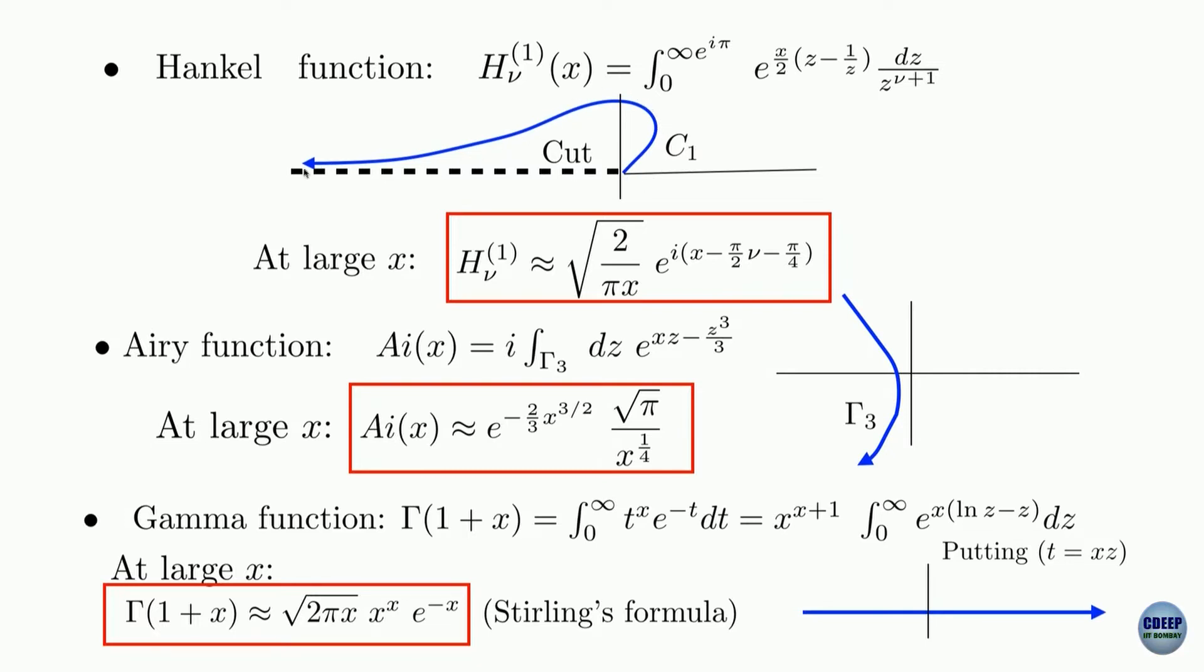That is why it is written like that. Along this curve, if you go, you are integrating this object. Now compare this object with whatever I was writing on the board. What you have as f of z is z to the power nu plus 1. What you have as g of z is z minus 1 over z divided by 2. And x is a real number. Thus you see we have an integral very similar to the general form that I was mentioning earlier.